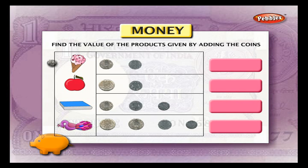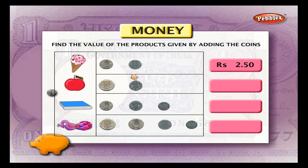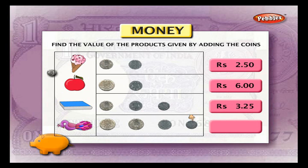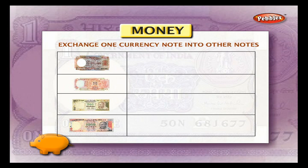Find the value of the products given by adding the coins. The cost of the ice cream is rupees 2 plus 50 paisa, which comes to 2 rupees 50 paisa. The cost of an apple is rupees 5 plus rupees 1, which comes to 6 rupees. The cost of the book is 2 rupees plus 1 rupee plus 25 paisa, which comes to 3 rupees 25 paisa. The cost of the sticker is 5 rupees plus 2 rupees plus 50 paisa plus 25 paisa plus 25 paisa, which comes to 7 rupees 75 paisa.